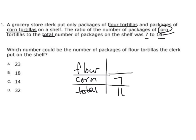So that means I have 16 total packages, so I need to know which one's a possible number. So in this case, if I have 16 total and I have 7 of the corn tortillas, then that means I'm going to have 9 of the flour tortillas. So now that I have all those filled out, I'm going to go ahead and look at what they're talking about.